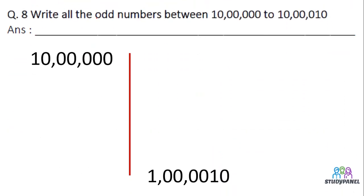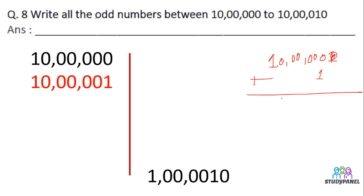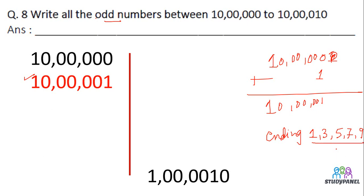Write all the odd numbers between 10,00,00 and 10,00,10. First we will find out what odd numbers are. The numbers ending with 1, 3, 5, 7, and 9 are called odd numbers. If any number ends with these digits, we can say it is an odd number.